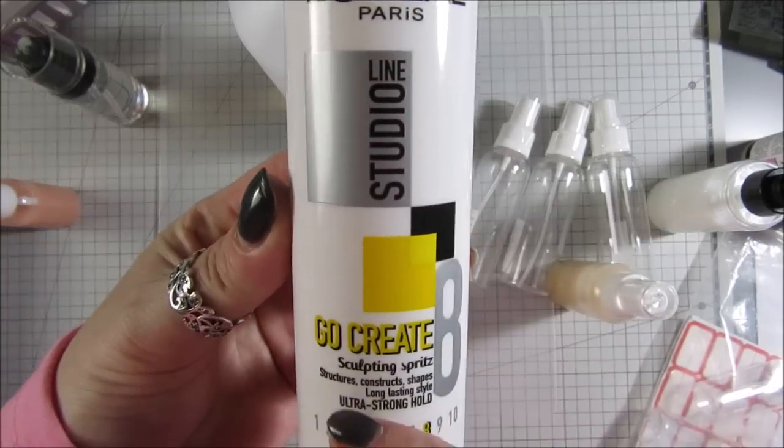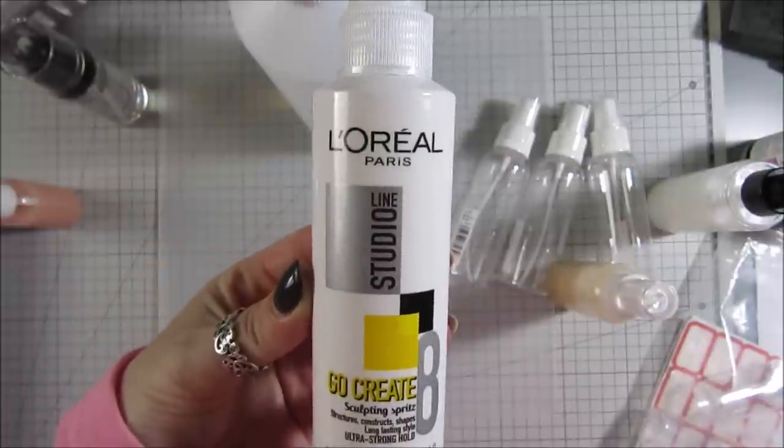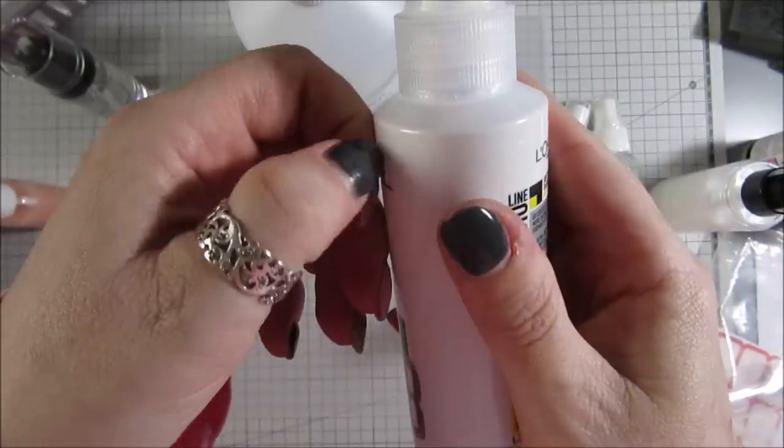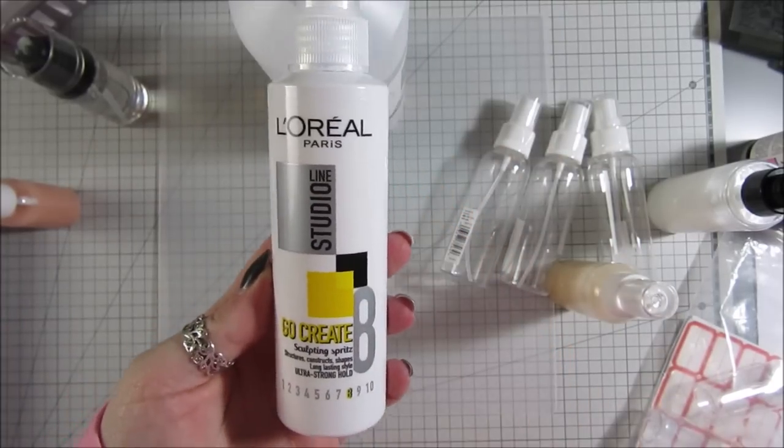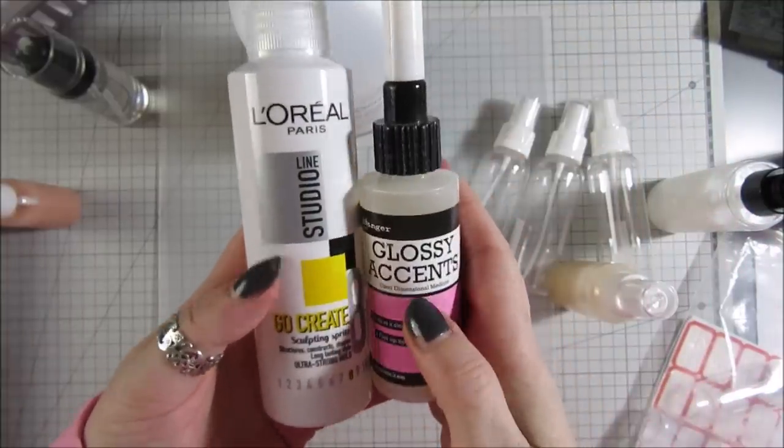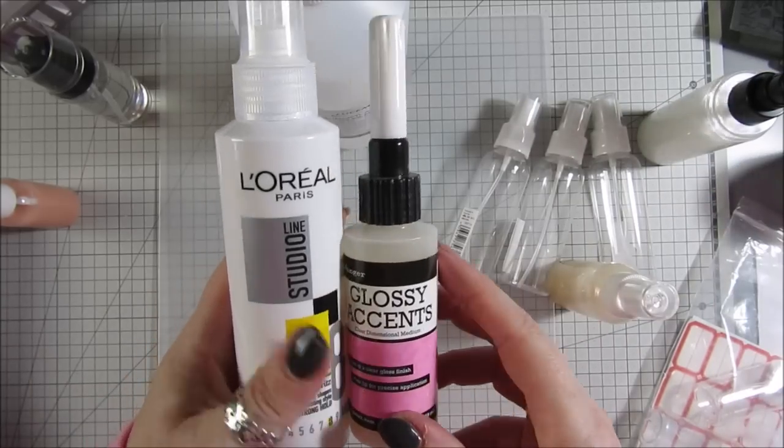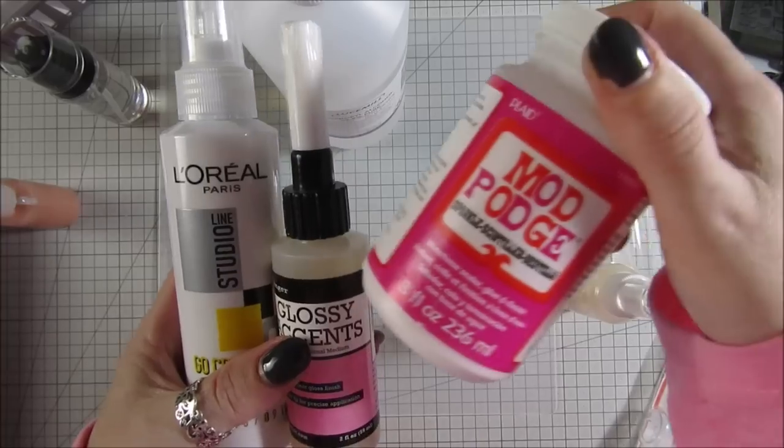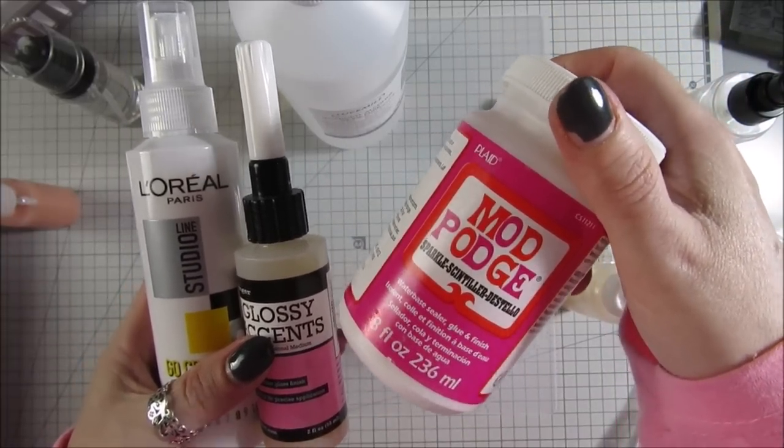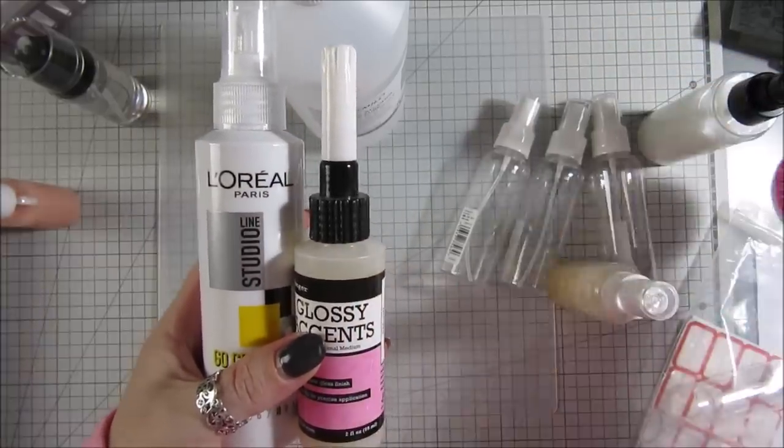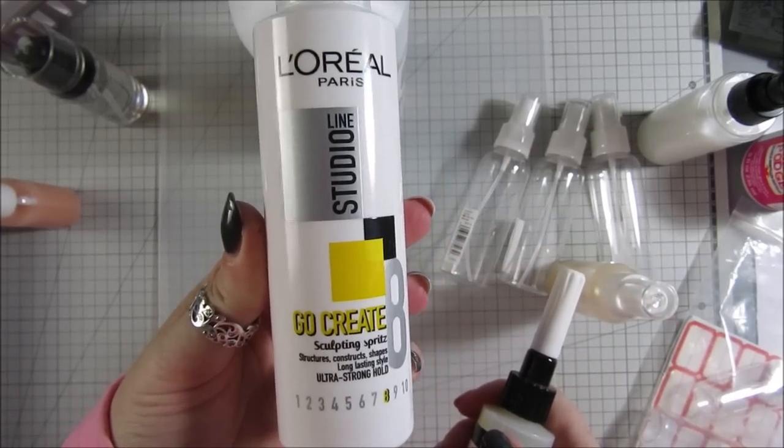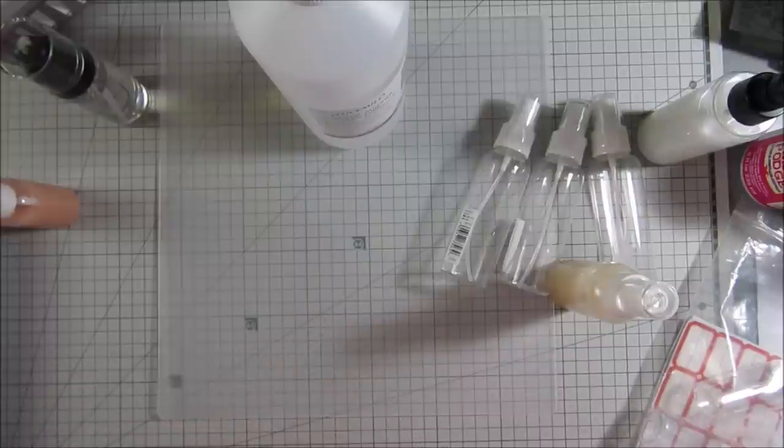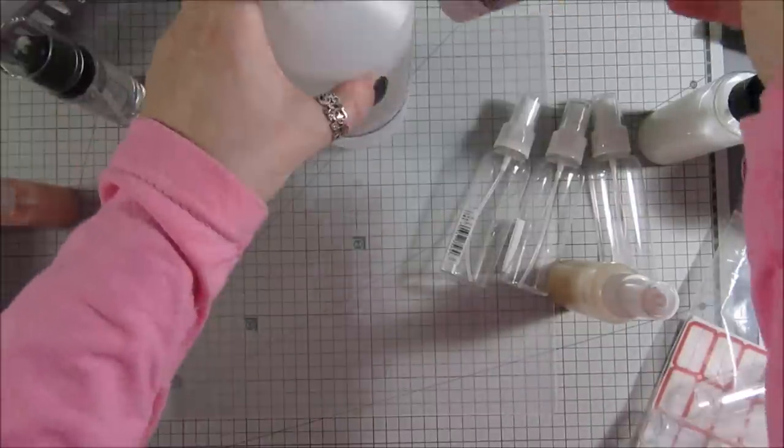This is Go Create Sculpting Spritz - I've been putting this in mine and it's brilliant. You can also use Glossy Accents, I've used it and it's really good. Some people use Mod Podge. It's just something to make the shimmer spray stick, because if you don't put anything sticky in it will just wipe away. Personally my choice is this gel hairspray type of thing. Any type of glue that dissolves will work.